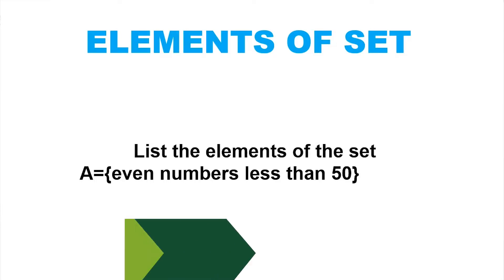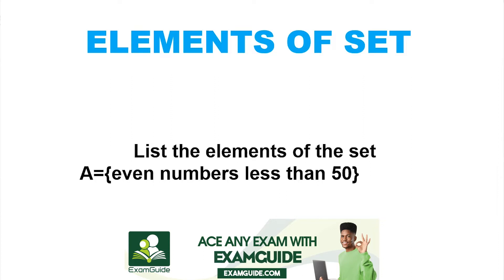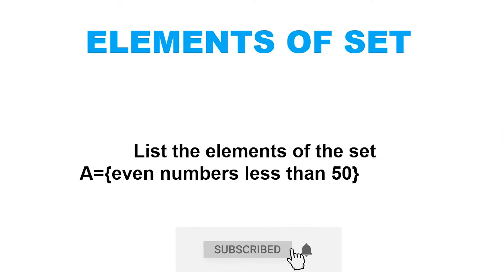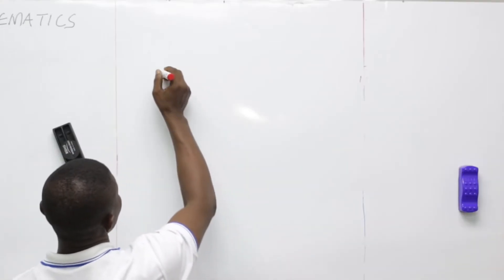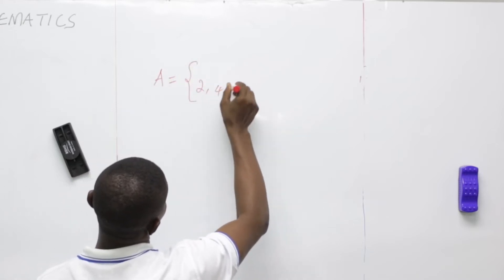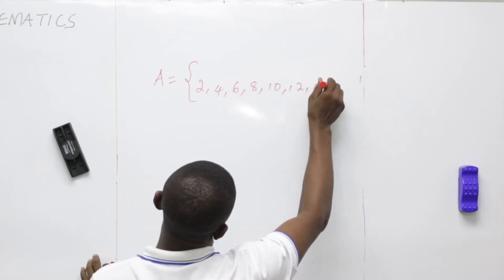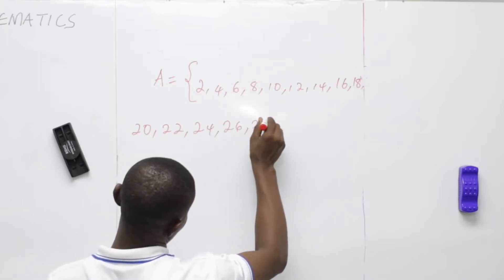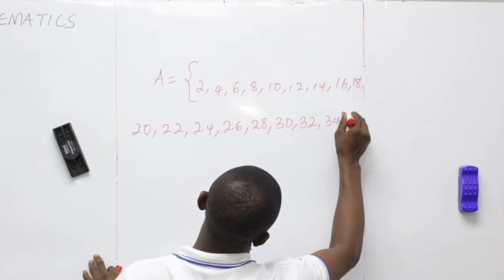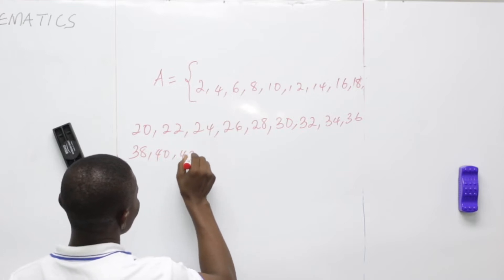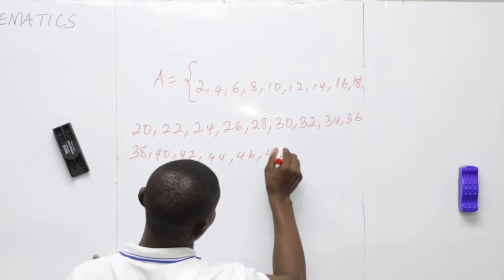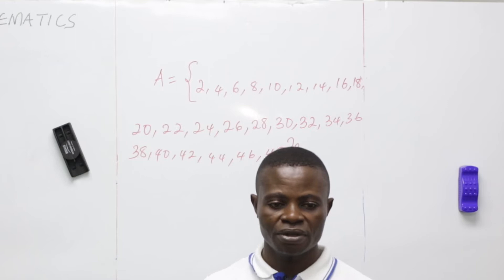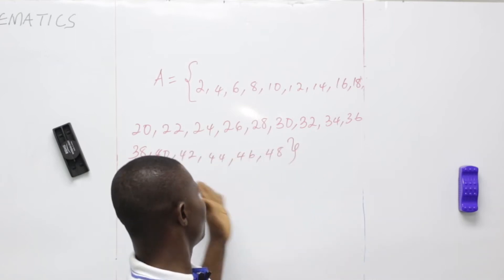Next, list the elements of this set, given that A is a set of even numbers less than 50. This implies that we are going to list even numbers. Even numbers start from 2, then 4, 6 — meaning A equals 2, 4, 6, 8, 10, 12, 14, 16, 18, 20, 22, 24, 26, 28, 30, 32, 34. Since it is less than 50, I will not include 50.